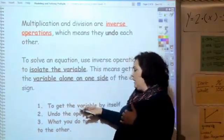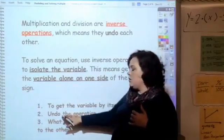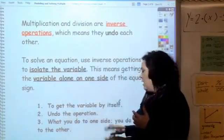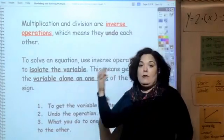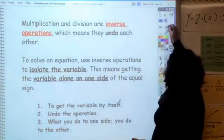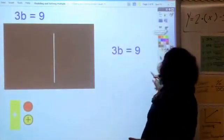We're going to follow the same steps: get the variable by itself, undo the operation with division, and whatever you do to one side you do to the other.